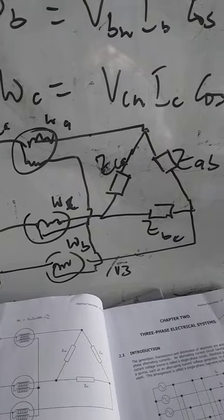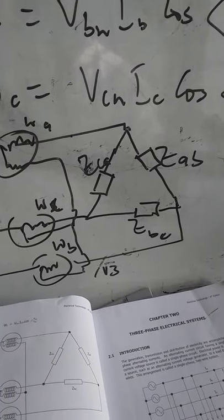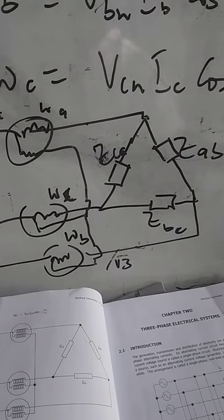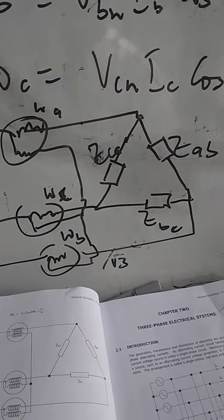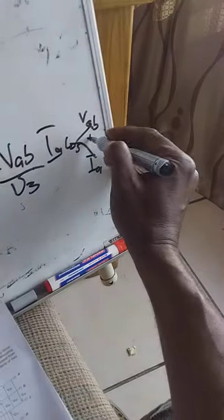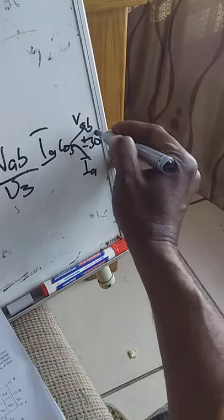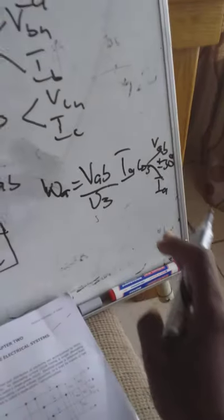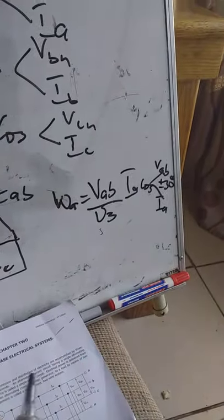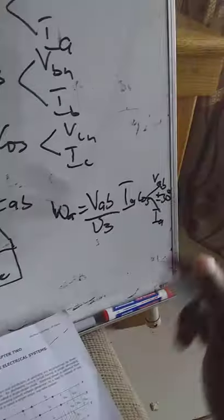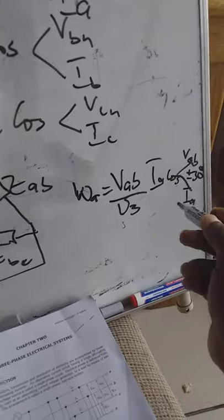Cos the angle which will be Vab and Ia, you get it, then plus or minus 30 degrees. Don't forget, this plus or minus 30 degrees will be determined by the direction of rotation of the sequence. If the sequence is a positive phase sequence you subtract 30. If it is negative you add 30 degrees to it.